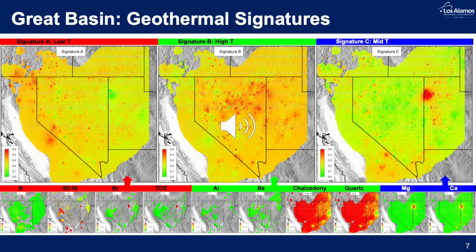Each of these signatures is predominantly characterized by specific attributes. For example, the first signature, Signature A, is represented predominantly by boron, oxygen-18 isotopes, bromide, and total dissolved solids.